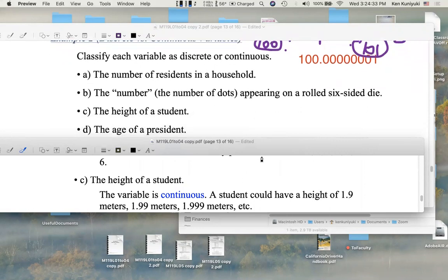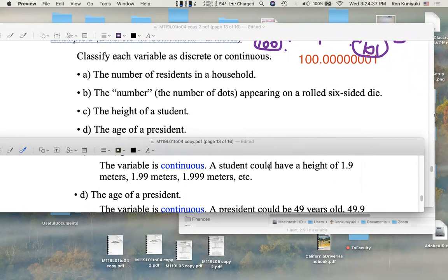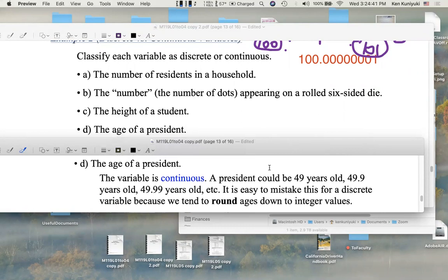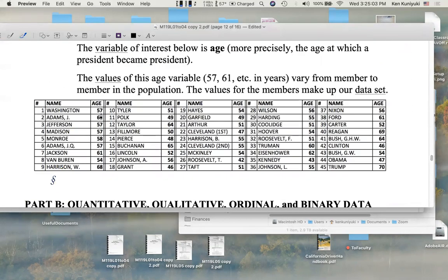The age of a president, actually, contrary to what my table might have suggested, that's actually continuous. Because a president could be 49 years old, or if you think very mathematically, 49.9 years old, 49.99 years old, and so forth. Now, this is a continuous variable, age. But it's easy to mistake this for a discrete variable, because we tend to round ages down to integer values. That's what I did in my president's ages table here. So you might have thought of these integers here, these nice whole numbers, and you might have thought, oh, discrete. The possible values could be like 51, 52, 53, and so forth. But no, because actually Washington was 57 years, and so many months, and so many days, so many seconds, whatever, right? Actually, age is a continuous variable. It's a continuous quantitative variable. However, we often display it in a way that we almost think it's discrete. It looks discrete, but it's really continuous.